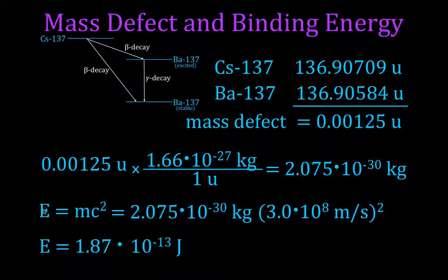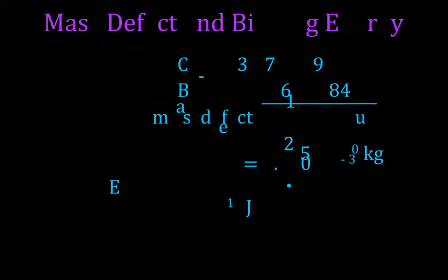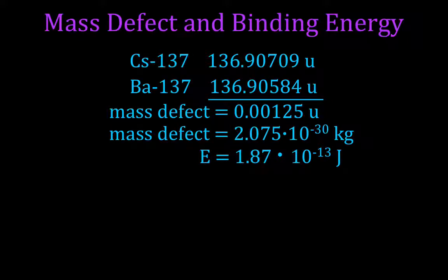Now, as maybe I mentioned before, the binding energy is usually expressed in electron volts or mega electron volts. So now we're just going to do another conversion from our joules into electron volts. So you can see we started out with our two masses. This is the mass defect. And we just converted to kilograms. Then we converted using Einstein's equation to joules.